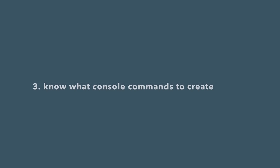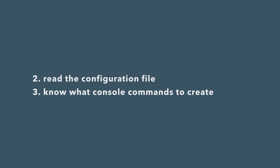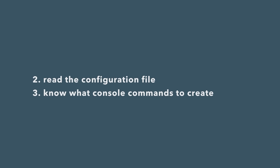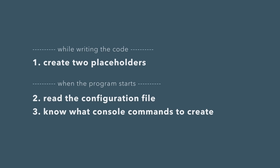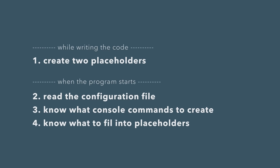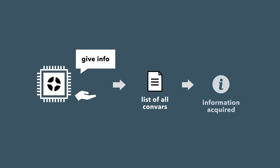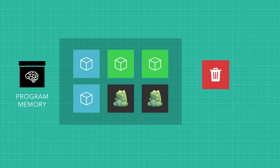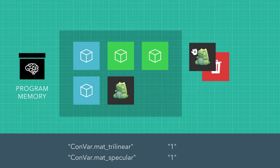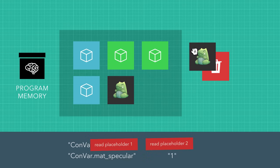The issue is that in the process of creating the new variables, two memory leaks occur. In order to know what console commands we have yet to acknowledge, we need to read through the entire configuration file. But since we need to read through the file first to know what console commands to create, we have to create a placeholder to store the command and another to store its setting. When we know what to fill into the placeholders, we construct the new console command by feeding the two placeholders into the Convar function. But now these two placeholders aren't being directly used and are wasting space, yet we can't delete them because the console command simply points to placeholder 1 and 2.